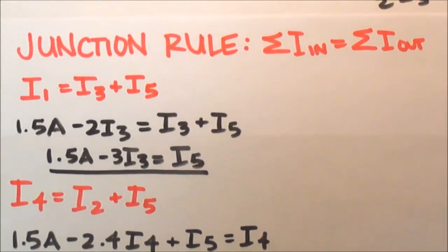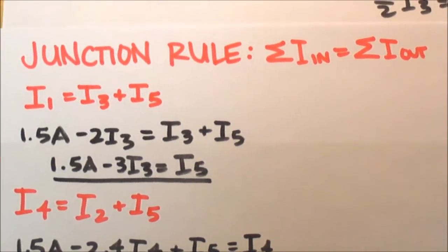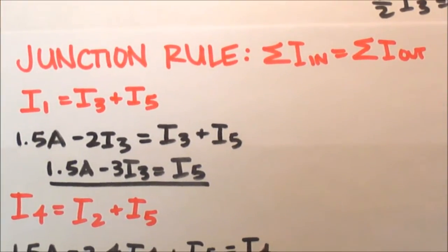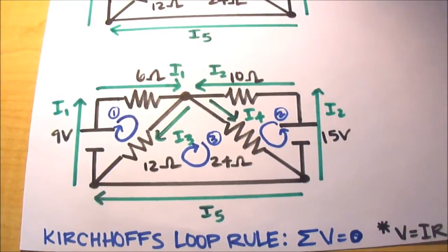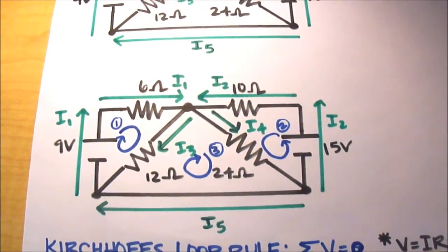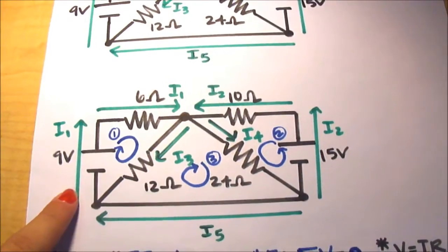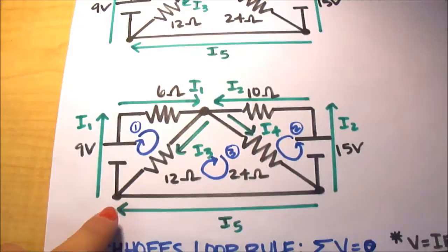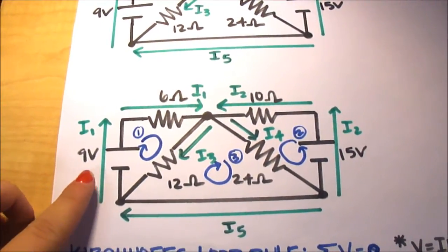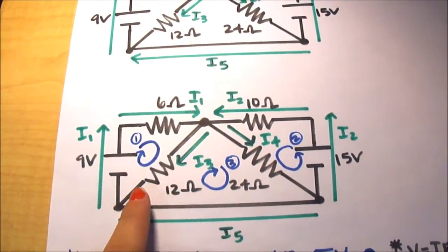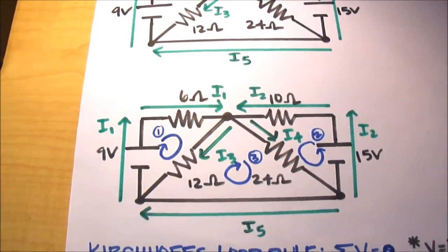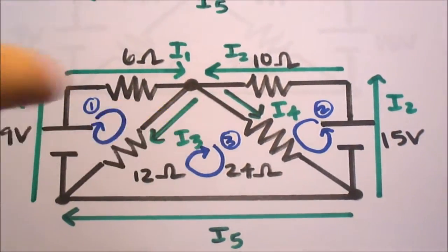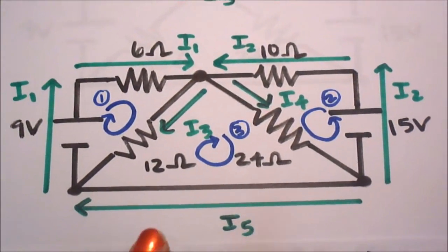Now we're going to use our junction rule, the Kirchhoff's junction rule, which means that the total current into a junction should equal the total current coming out. Referring back to our picture, you can see that I1 should equal I3 right here, plus I5, because I1 is going out of this junction here, and I3 and I5 are going in. Likewise, the current I4 should equal the current I2 plus the current I5.